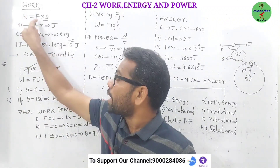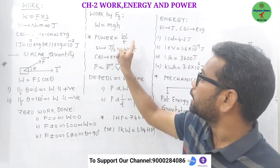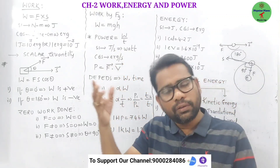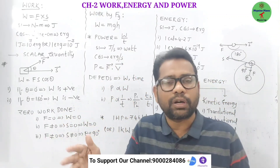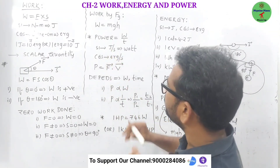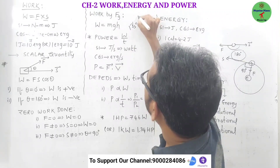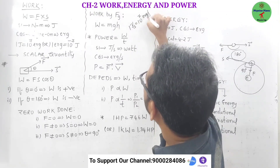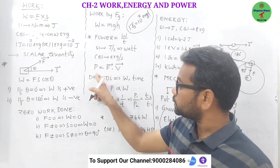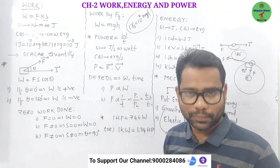Now, power: the rate of doing work is called power. While work depends on the magnitude of force and displacement, power depends on work and time. Its SI unit is joule per second, also called the watt. Power can also be measured in kilowatt, megawatt, and gigawatt. The CGS unit is erg per second, and one joule per second equals 10 power 7 erg per second. Power can also be defined as the product of force and velocity.